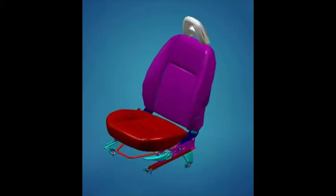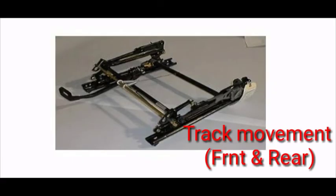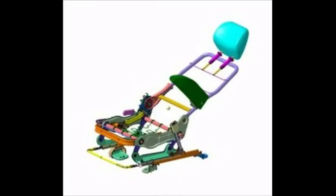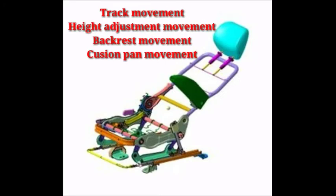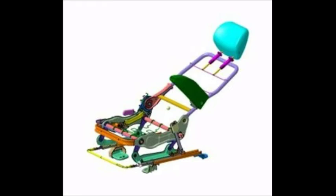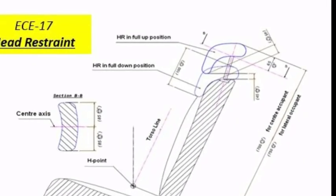In kinematic study, we focus on kinematic simulation of a seat. There is track movement — front and rear movement — that should be understood, along with height adjuster movement and backrest movement. In structural seat kinematic simulation, we look at track movement, height adjuster movement, backrest movement, and cushion pan adjustment. Related to the headrest, we should also understand the kinematic simulation of headrest length adjustment and headrest position changing, and understand their measurements and values.